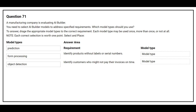Question number 71. A manufacturing company is evaluating AI Builder. You need to select an AI Builder model to address specified requirements. On the left-hand side you have the model types, on the right-hand side you have the requirement, and you need to choose the correct model type.